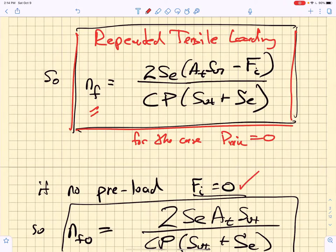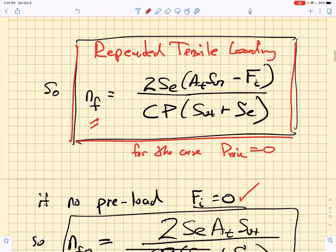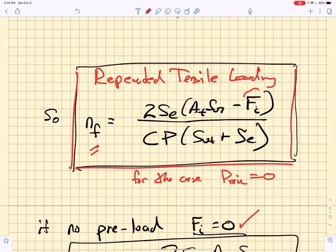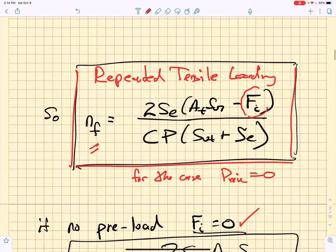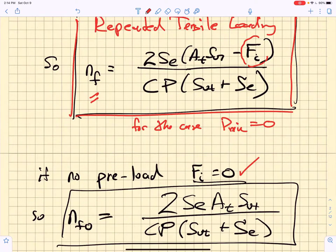Now we can ask the question, what happens if we have no preload applied to the bolt? So we come up here and we look at this equation. We set that fi equal to zero. And so that fatigue factor of safety for the case of fi equals zero, I'm going to call that nf0.